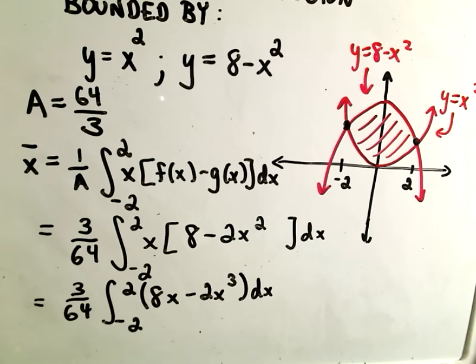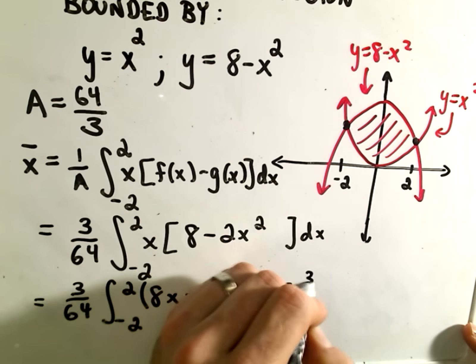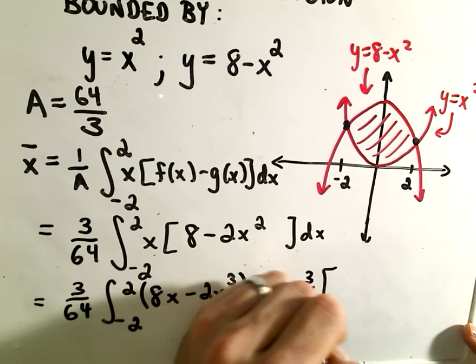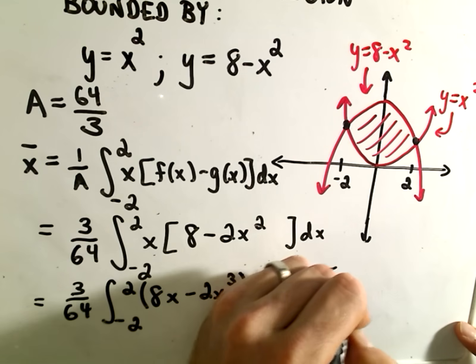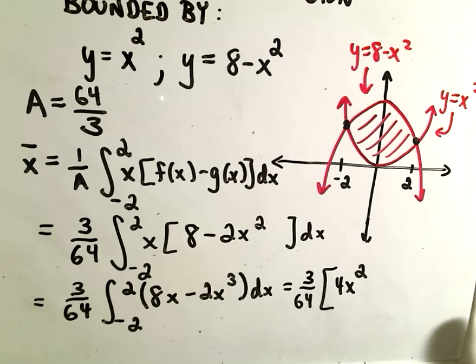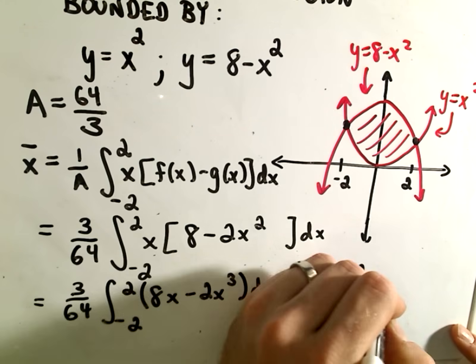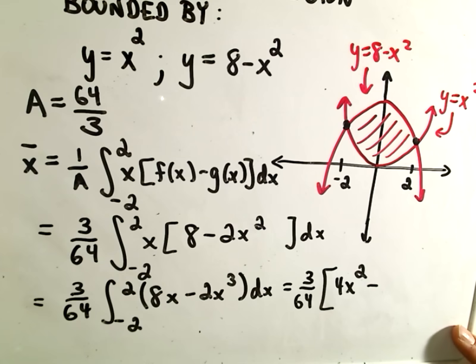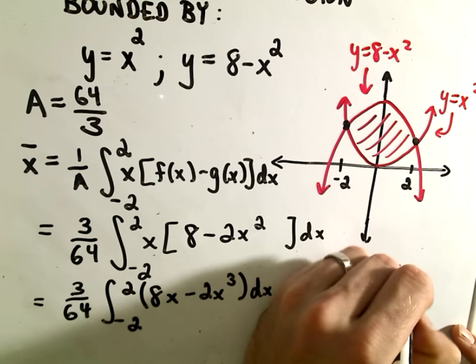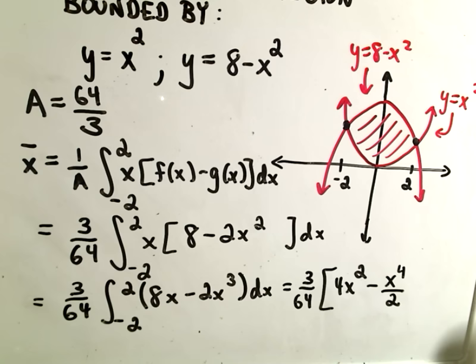When we integrate that, we have our 3/64 hanging out front. 8x will give us 8x²/2, or 4x² when we integrate. If we integrate -2x³, we'll get -2x⁴/2, or simply -x⁴/2.